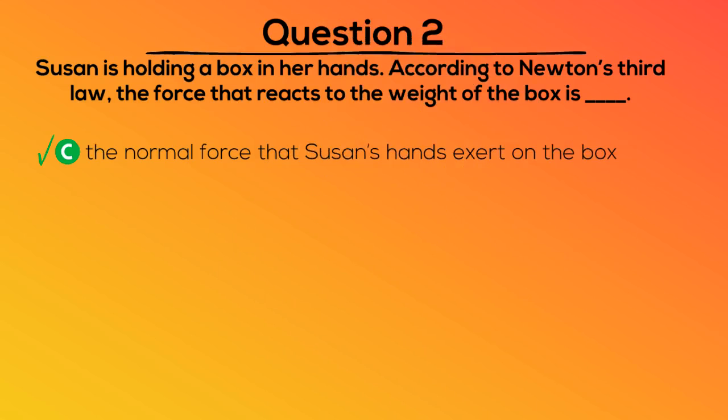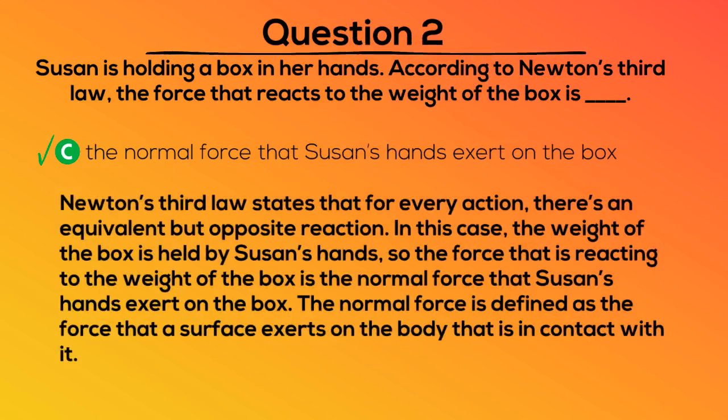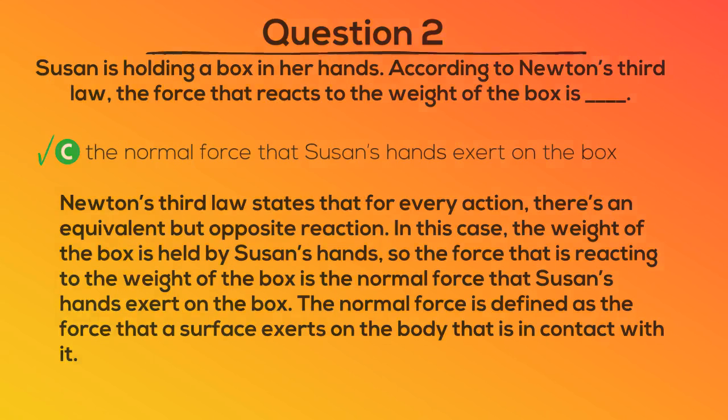The correct answer is C, the normal force that Susan's hands exert on the box. Newton's third law states that for every action, there is an equivalent but opposite reaction. In this case, the weight of the box is held by Susan's hands, so the force that is reacting to the weight of the box is the normal force that Susan's hands exert on the box. The normal force is defined as the force that a surface exerts on the body that is in contact with it.